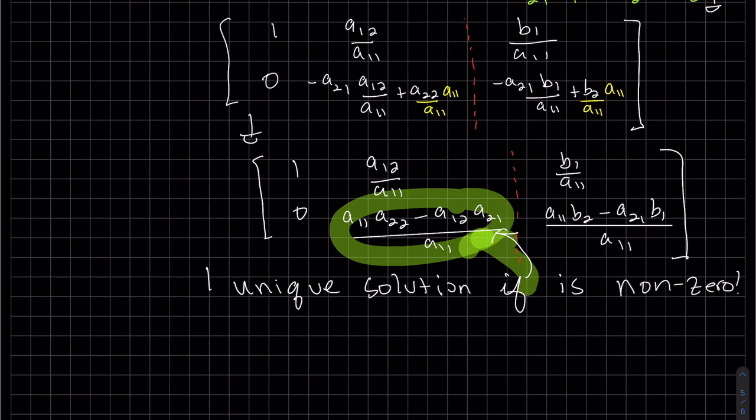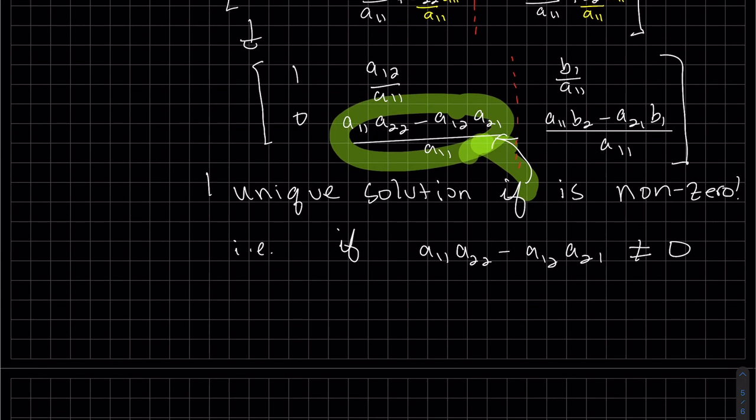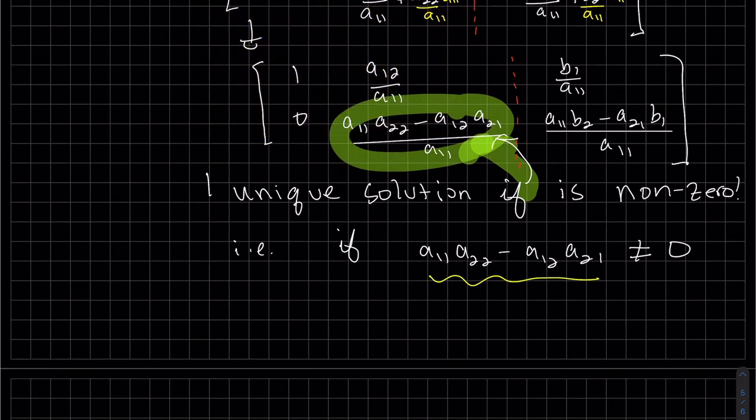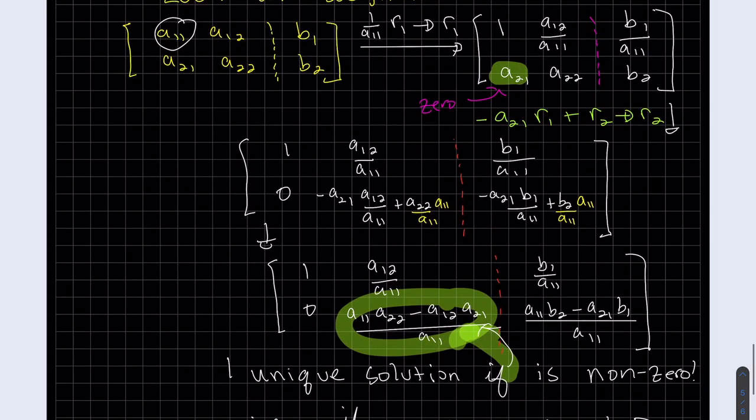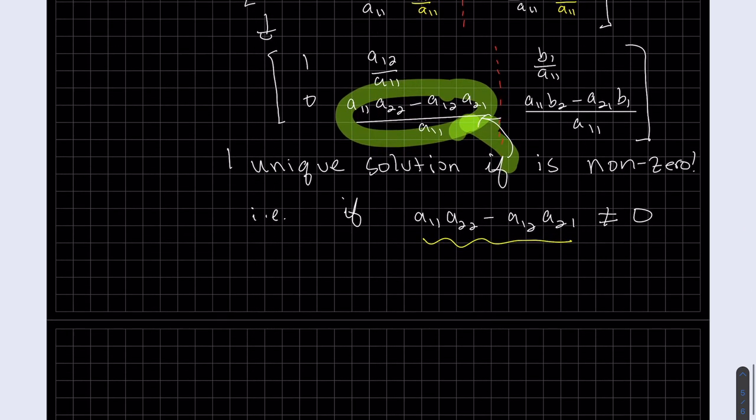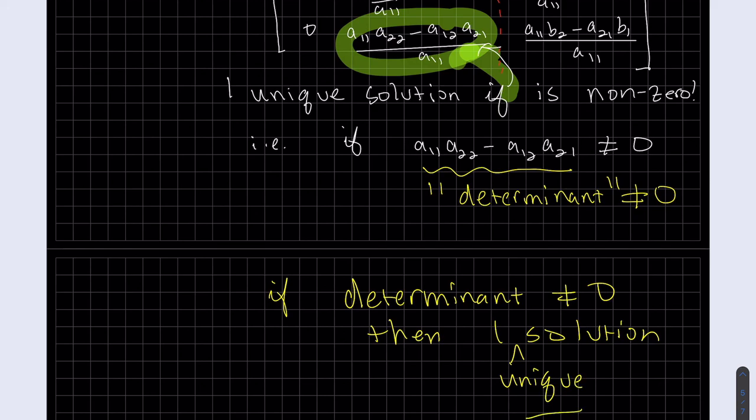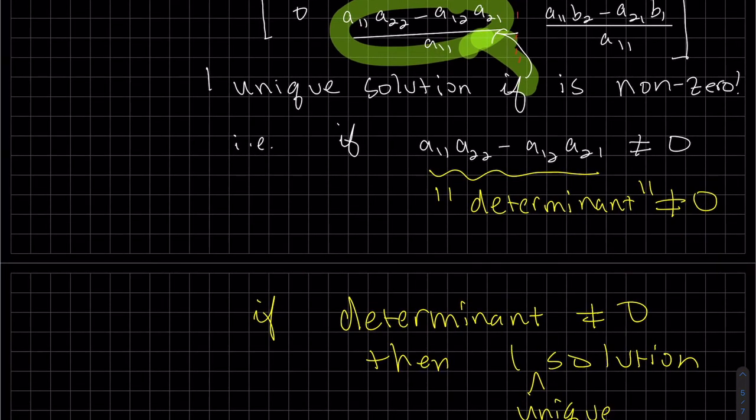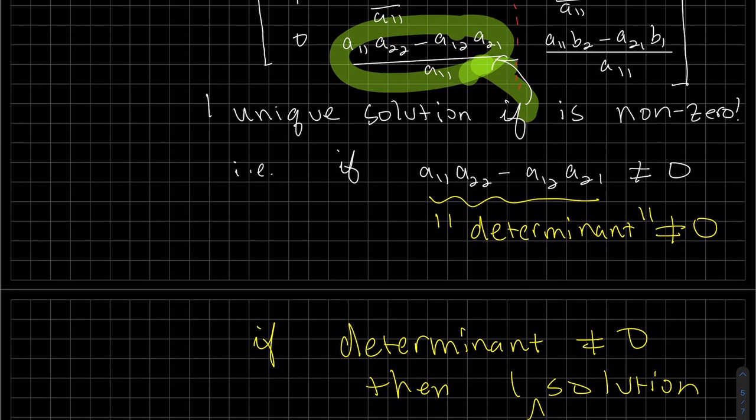So we don't know this yet, maybe some of you do. But a11 times a22 minus a21, that is called the determinant. So basically if the determinant is non-zero, then one solution, and that's one unique solution. That's the final thing I wanted to make a point of. We'll be seeing that throughout this course. The determinant not being zero is very helpful in a lot of cases. That's it for today.